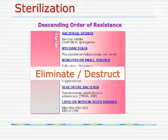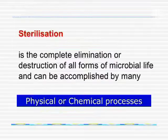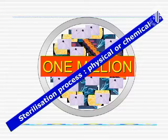Sterilization depends on the descending order of resistance. The most resistant is the bacterial spores. That's why we use spores in validating sterilization — if you can destroy the spores, your sterilization is perfect. Complete destruction of everything is called sterilization, whereas disinfection just brings down the load. Sterilization is the complete removal by either a physical or chemical process.